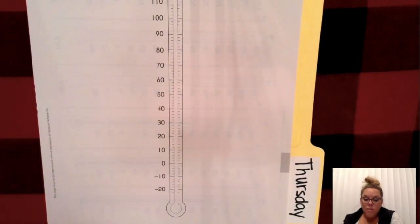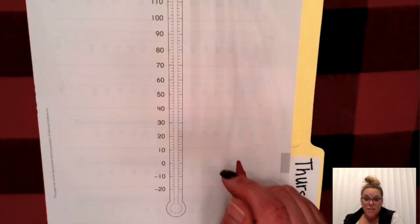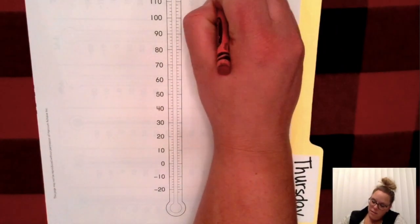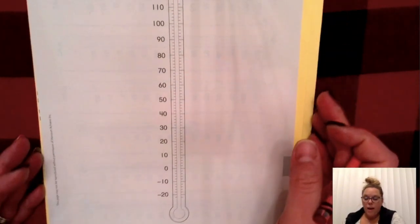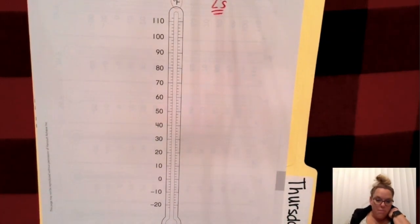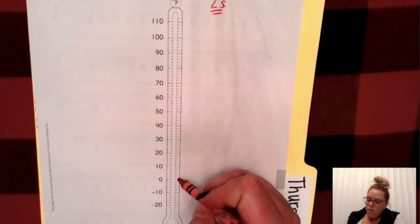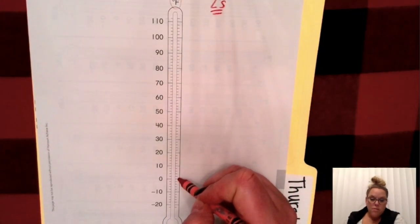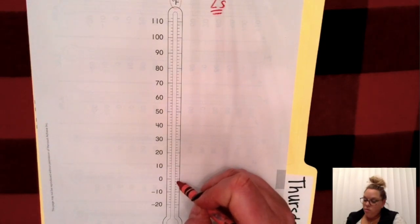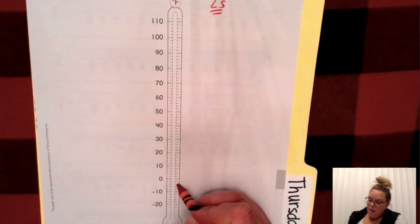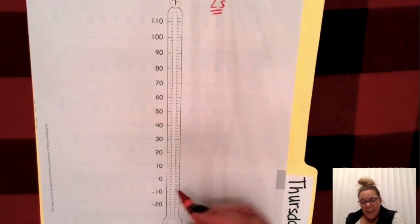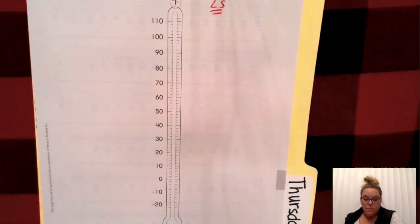When we count the marks between the tens, we're going to be counting by twos. After we reach zero, when we're going down, then we're going to count negative 2, negative 4, negative 6, negative 8, negative 10, and you keep on going.